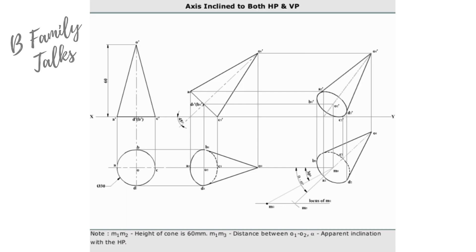Note: M1 M2 is the height of the cone, which is 60 millimeters. M1 M3 is the distance between O1 and O2 as shown in the figure. Alpha is the apparent angle of inclination with the HP.